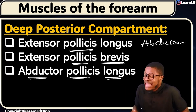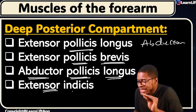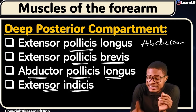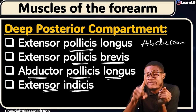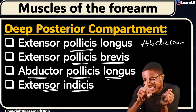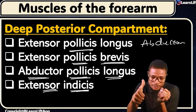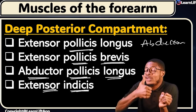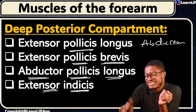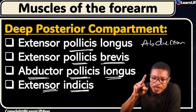Number four is extensor indicis. 'Indicis' refers to the index finger. Here's your index finger — this is your thumb, that's why we call it pollicis. This is your indicis, the index finger. The middle finger is next to it.